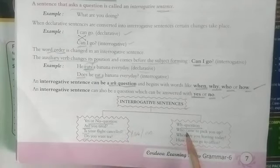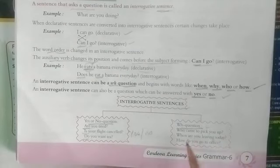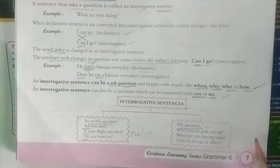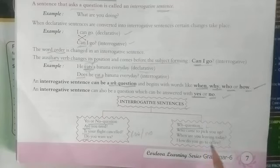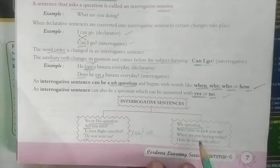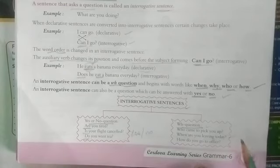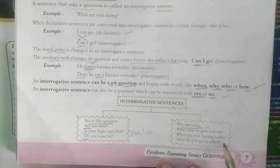For WH questions, a proper sentence answer is needed. 'Who came to pick you up?' — 'My father came to pick me up.' 'When are you leaving today?' — 'I am leaving at 4 pm today.' 'How do you go to office?' — 'I go to office by bus or by car.' Let's move to the next page.